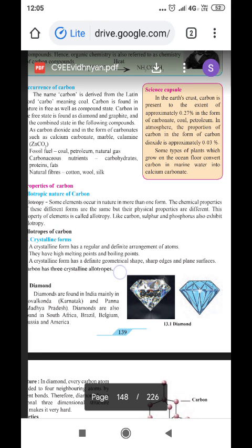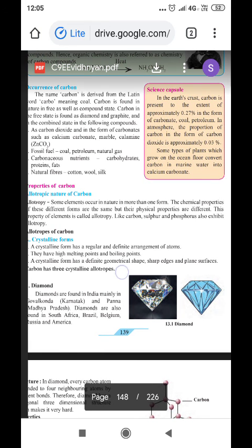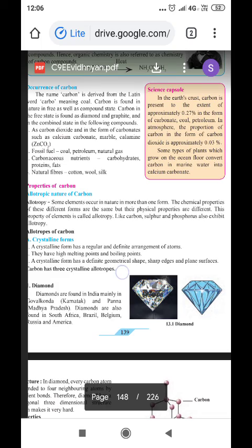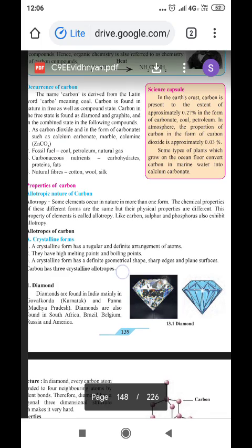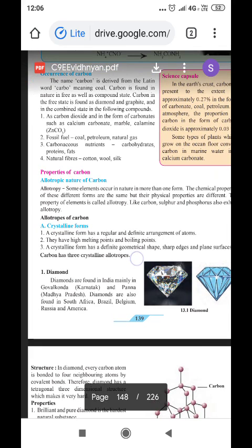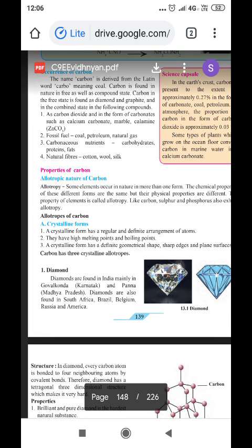In the atmosphere, the proportion of carbon in the form of carbon dioxide is approximately 0.03%. Some types of plants which grow in the ocean convert carbon in marine water into calcium carbonate.